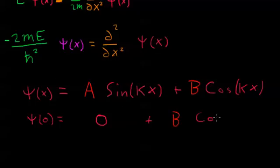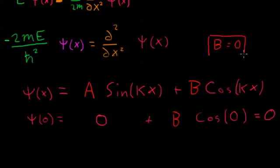B times the cosine of zero. Since the cosine of zero is one, the only way to make this equal zero, which we know it equals zero from our boundary condition, is that B has to equal zero. That's the only way to make this equation true. So B equals zero. This is more information about what our wave function looks like, so I'll put it in this red box here.